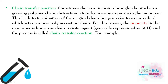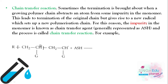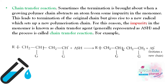The third termination mechanism is the chain transfer reaction. Termination occurs when a growing polymer chain extracts an atom from some impurity present in the monomer. This impurity is known as the chain transfer agent, represented as A-H. The growing radical reacts with the impurity, gaining a hydrogen and stopping the chain as a completed polymer, while the impurity itself becomes a new free radical that can restart chain growth from a monomer.